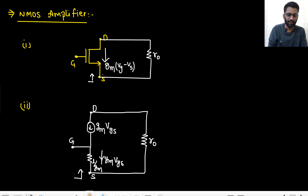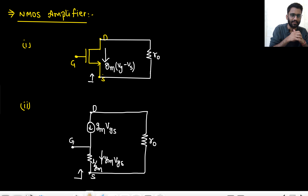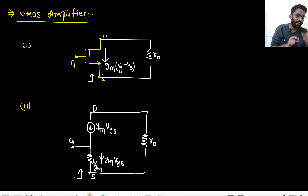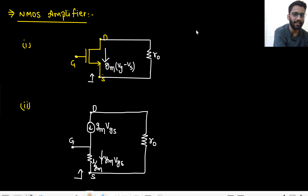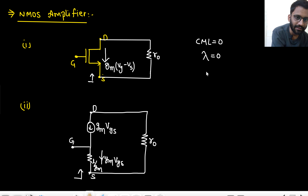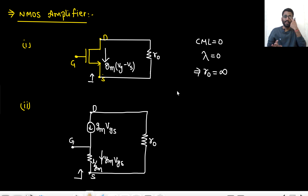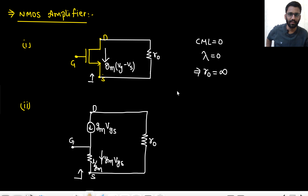The basic things to remember: in MOS there is always a current gmVgs — this is the most important point. Between drain and source we have R0 resistance. Don't forget this R0 resistance. In most questions it will be written that channel length modulation (CLM) is 0, meaning lambda is 0, meaning R0 is infinity. So gmVgs current is flowing, from source to gate there's 1/gm, from source to drain there's R0.